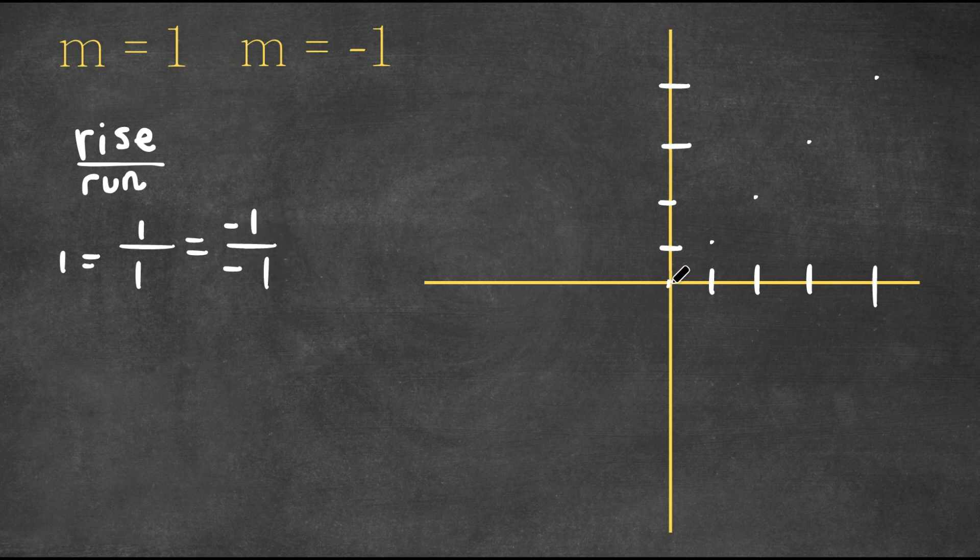So we could also do negative one over negative one, meaning a negative slope is going down, and because the run is negative, we're going to the left. So now we go down one and to the left by one. Down one again and to the left one again.